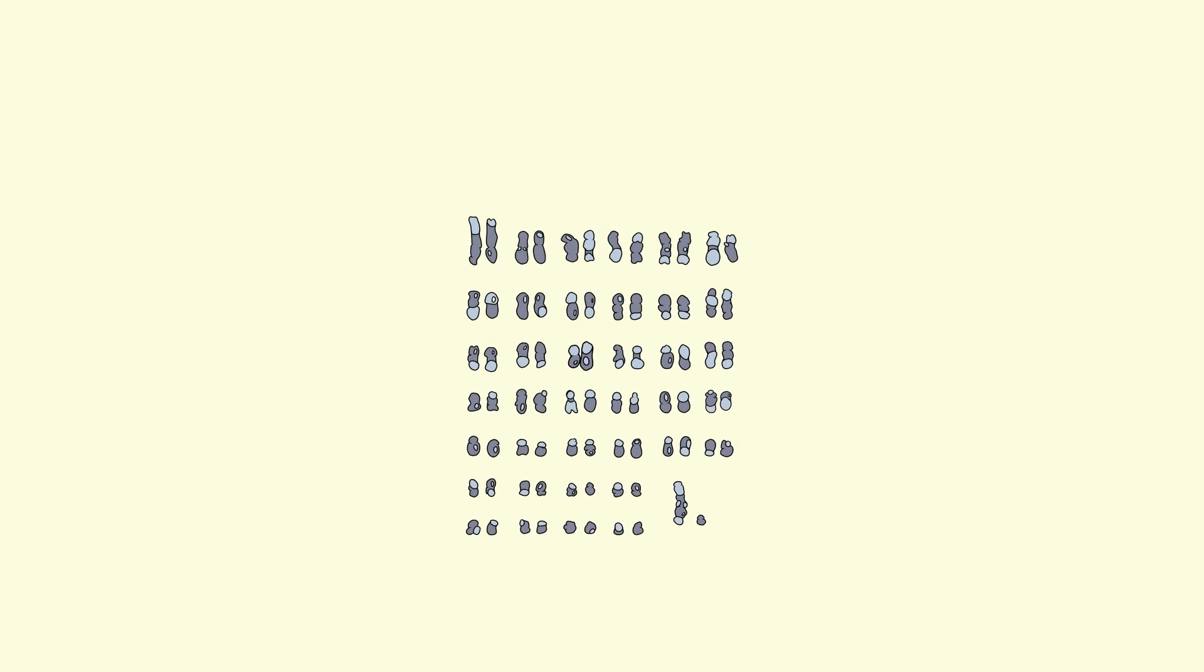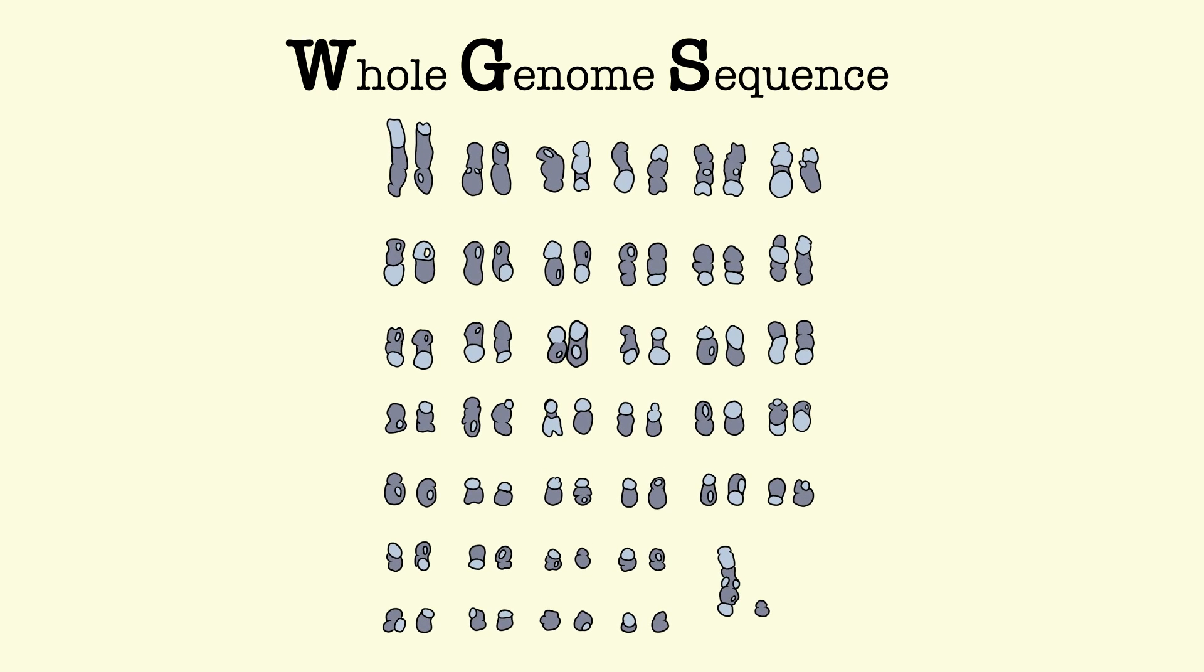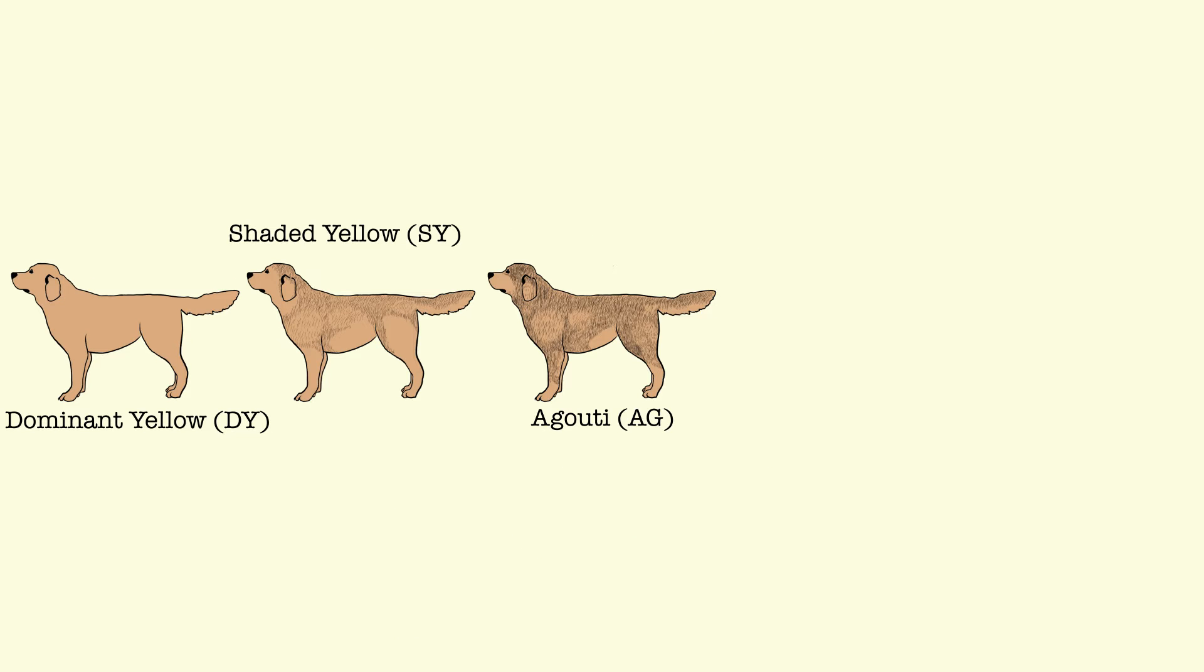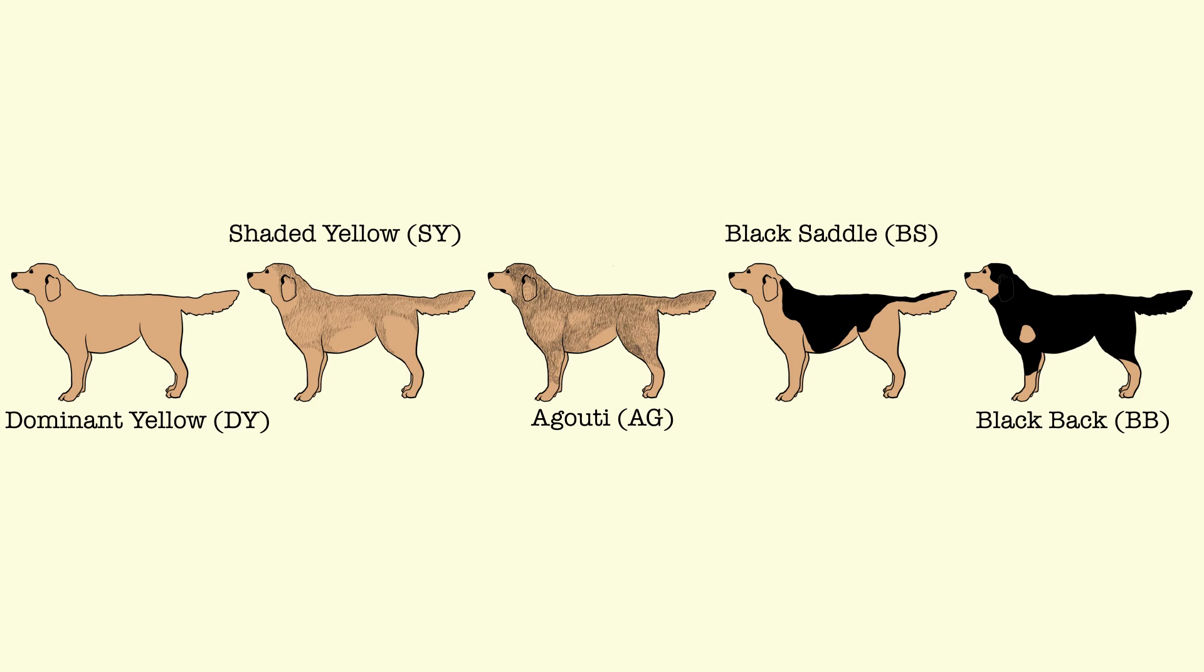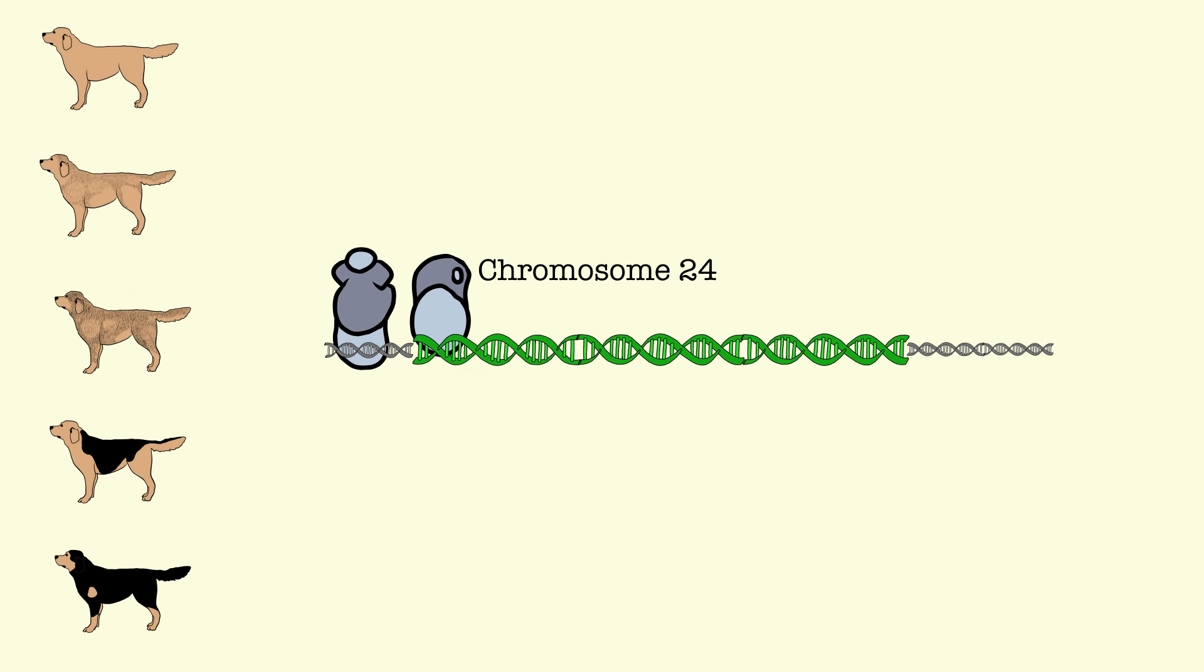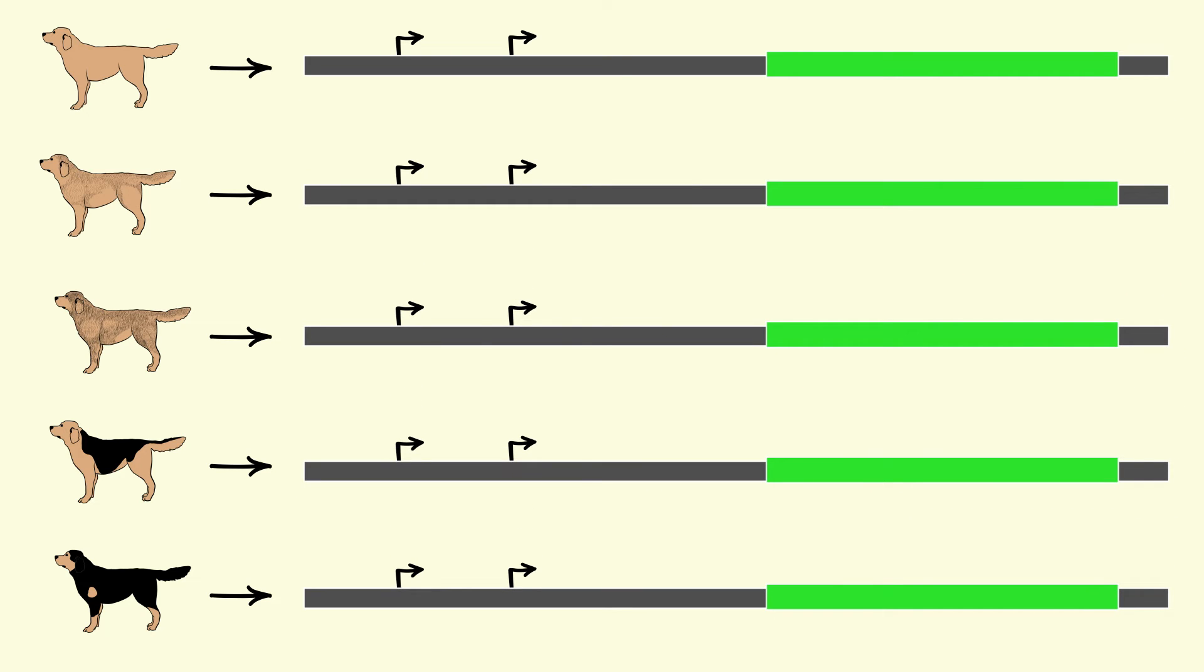In this 2021 paper, the researchers compared whole genome sequences for domestic dogs of five recognized phenotypes: dominant yellow, shaded yellow, agouti, black saddle, and black back. They would then compare these genomes at the ASIP locus for each of the phenotypes, quantifying differences in the DNA sequence of each.